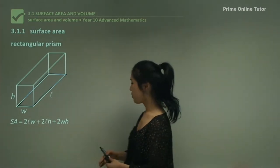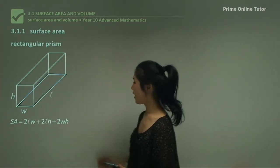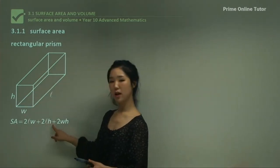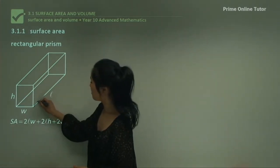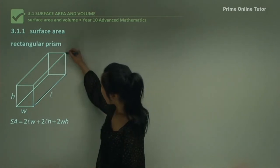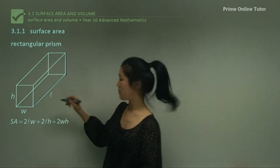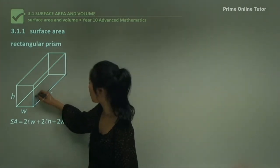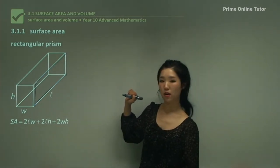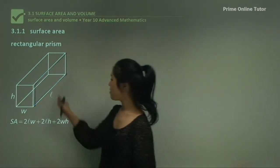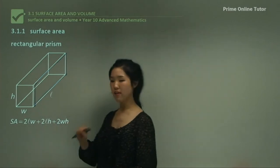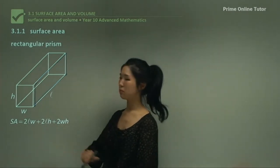Now 2LH: that's because we're multiplying L times H. L is this dimension again, and this is the height, H. The shape we're looking at is this particular face, and again there's one on this side and an identical shape on the other side, so we simply multiply by 2.